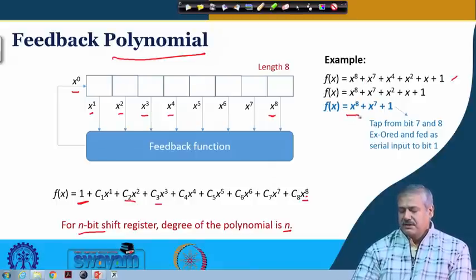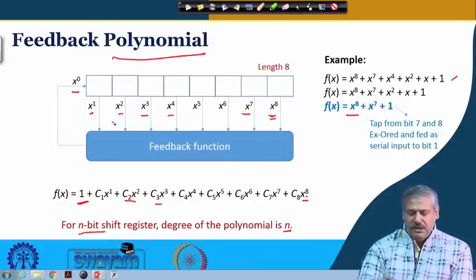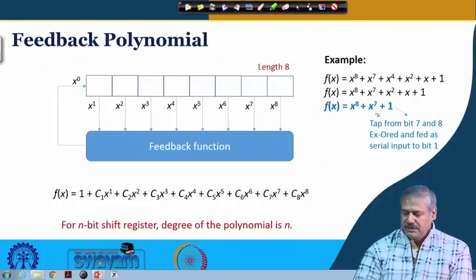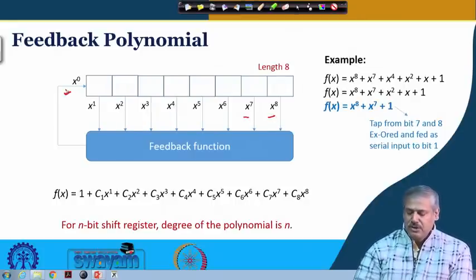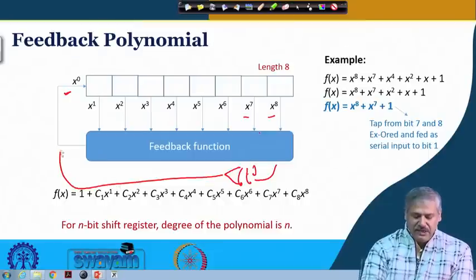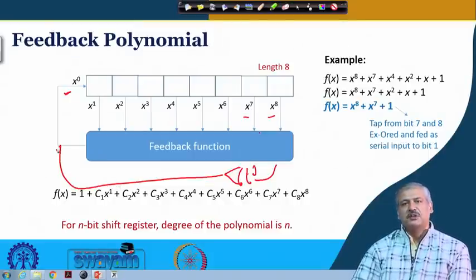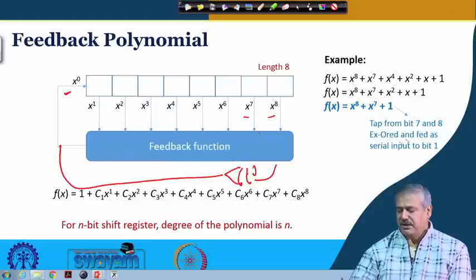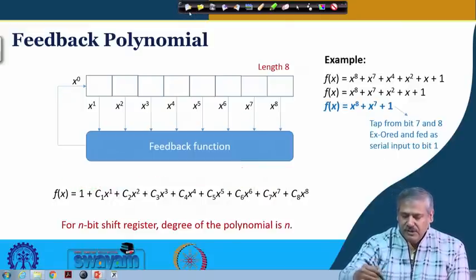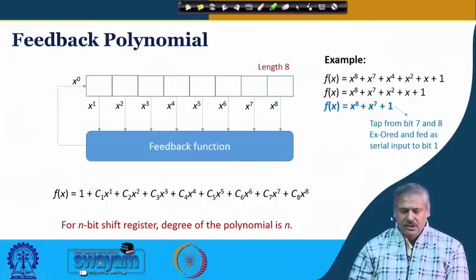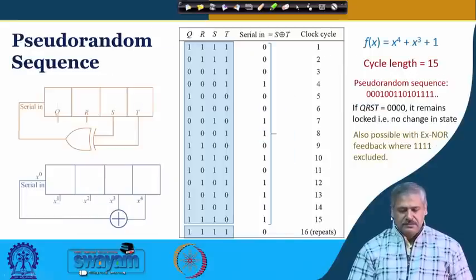For example, if it is X^8 + X^7 + 1, that means taps from bit 7 and bit 8 are XORed and fed as serial input to bit 1. X^8 and X^7 are XORed and fed as input — so this is the meaning of this polynomial.